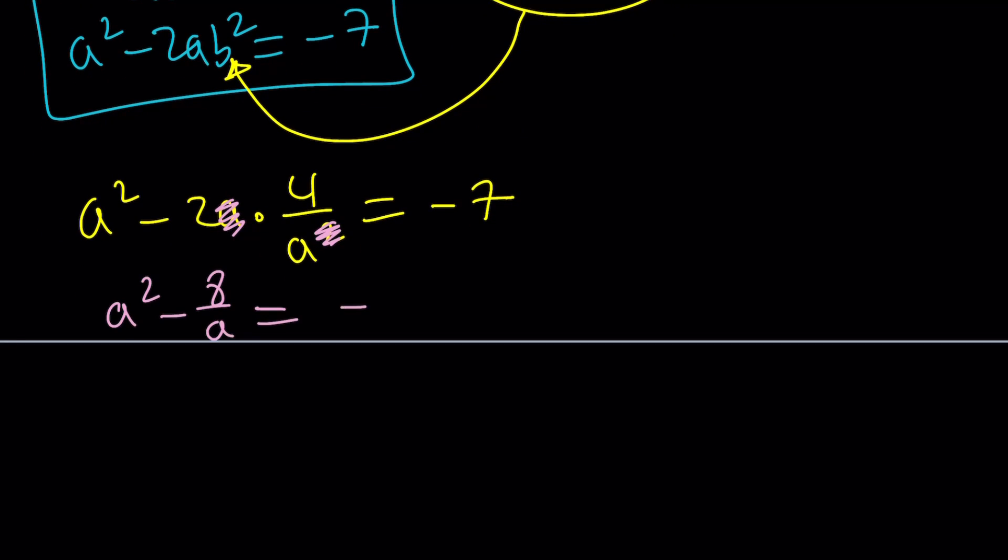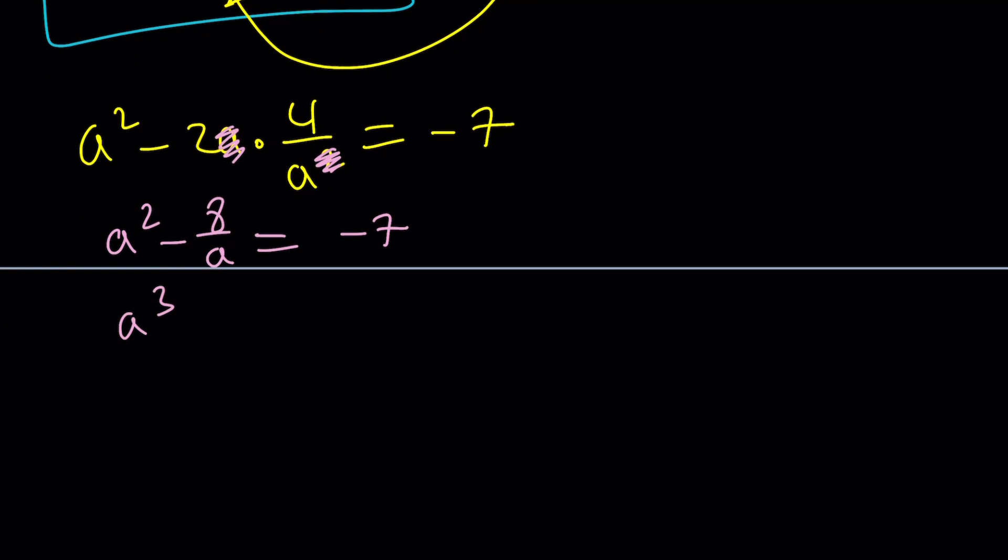And that gives us a squared minus 8 over a equals negative 7. Remember what I said about sum of coefficients being 0 and 1 being one of the solutions? That actually happens here. If you just look at it, you hopefully saw that a equals 1 is a solution. But, let's turn this into a cubic equation. Multiply everything by a: a cubed minus 8 equals negative 7a. And I'll put 7a on the left.